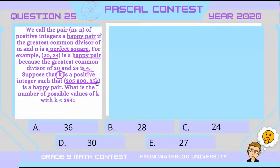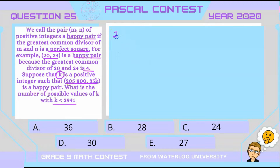Now, the question: suppose that k is a positive integer such that this pair is a happy one. What is the number of possible values of k if k is less than 2941? We're going to start with a couple of different skills here. First, let's take the number 205,800 and find its prime factorization.